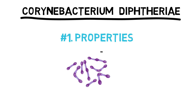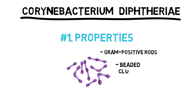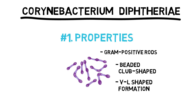Important properties. Corynebacteria are gram-positive rods that appear club-shaped, wider at one end, and are arranged in V or L-shaped formations. The rods have a beaded appearance. The beads consist of granules of highly polymerized polyphosphate, a storage mechanism for high-energy phosphate bonds. The granules stain metachromatically — for example, a dye that stains the rest of the cell blue will stain the granules red.